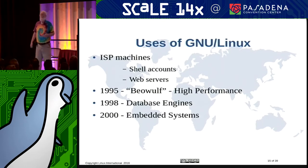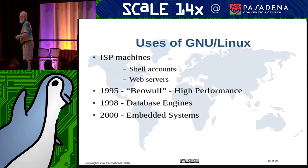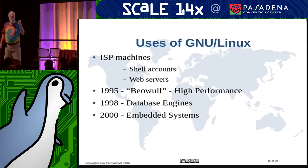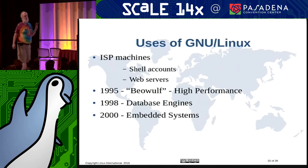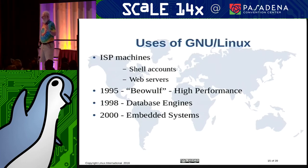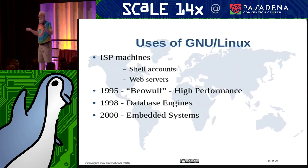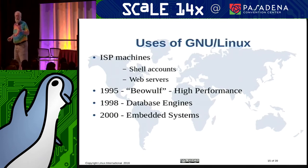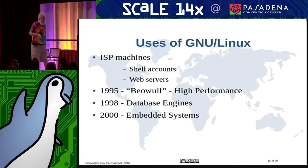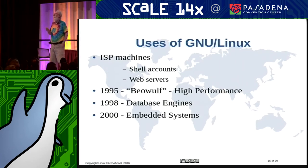In 1995 there was another problem: supercomputer companies like Cray were going out of business. They would design very expensive, complex systems and sell five of them — two typically to universities, two to certain organizations, and one would disappear somewhere. Two people from NASA — Donald Becker and Thomas Sterling — developed the concept called the Beowulf supercomputer: taking inexpensive PCs, dividing up the application, and having them do amazing work. You could get 40 times the computing power for the same money. That created another market for Linux.